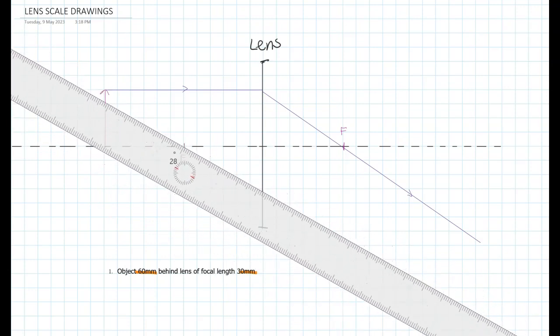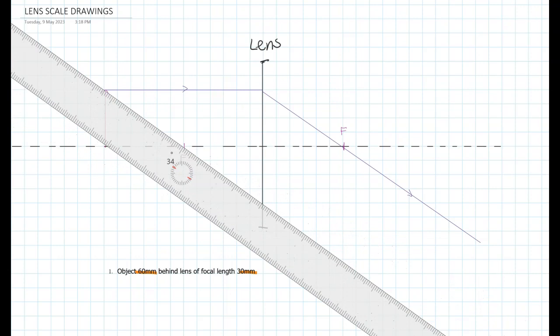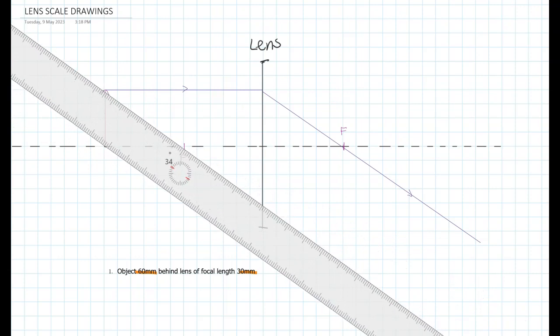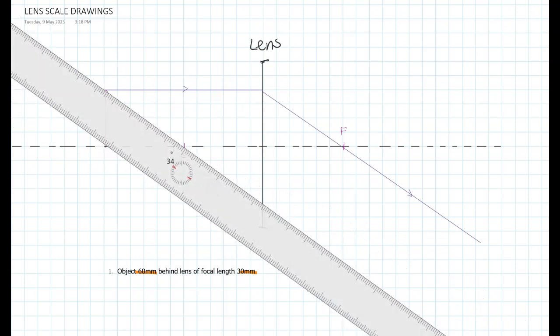The second rule is that a ray that passes through the focal point on this side of the lens would emerge parallel. So you could draw that one.